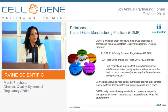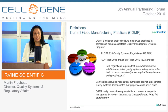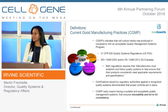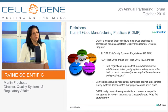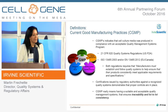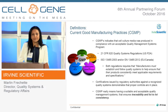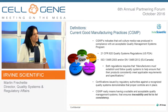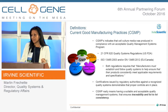Another definition I want to make clear is GMP. We have learned that cell processing centers or clinics are requesting a GMP certificate. A GMP certificate does not exist. However, if you are promised GMP media, that means the cell culture media was produced in compliance with an acceptable quality management system — either produced in an FDA-registered facility meeting 21 CFR 820 quality systems regulations, or holding an ISO 13485 certificate.